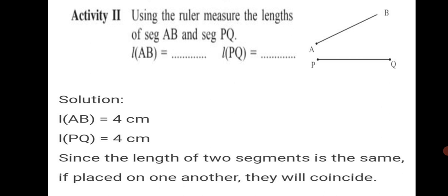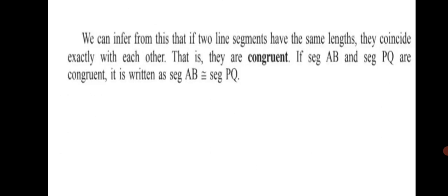Since the length of two segments is the same, if placed one above the other, they will coincide. We can infer from this that if two line segments have the same length, they coincide exactly with each other. That is, they are congruent.